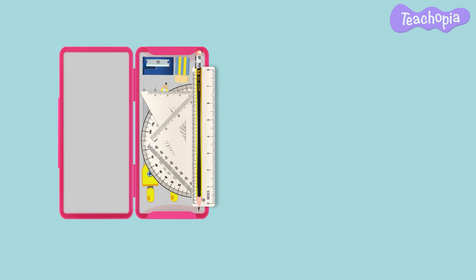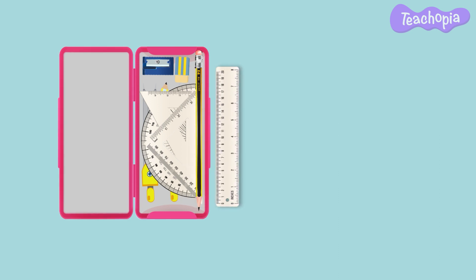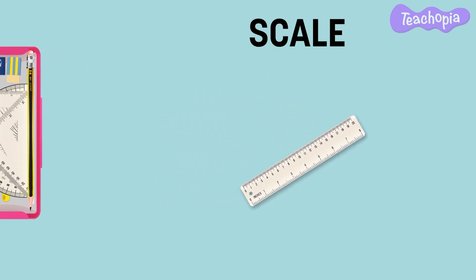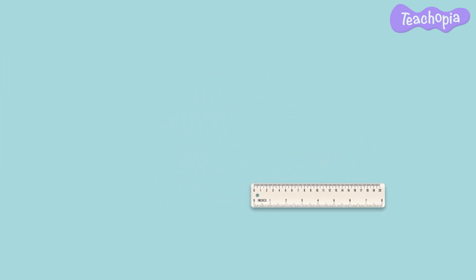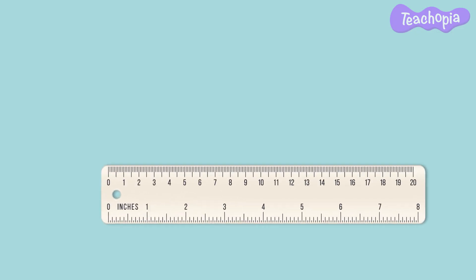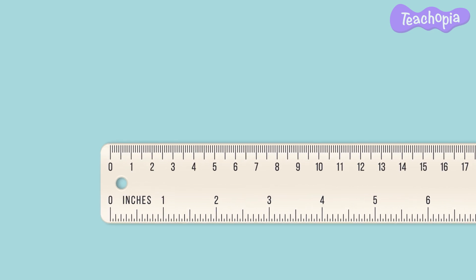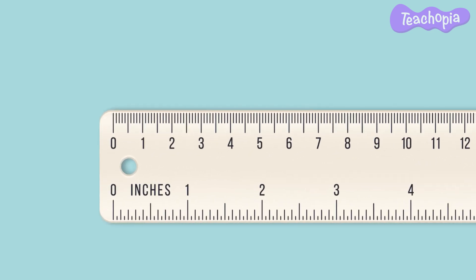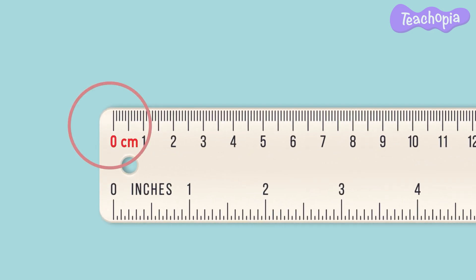First let us learn about the scale. The scale is used to measure length and draw straight lines. Usually all lines drawn using a scale use the zero mark as the starting point.